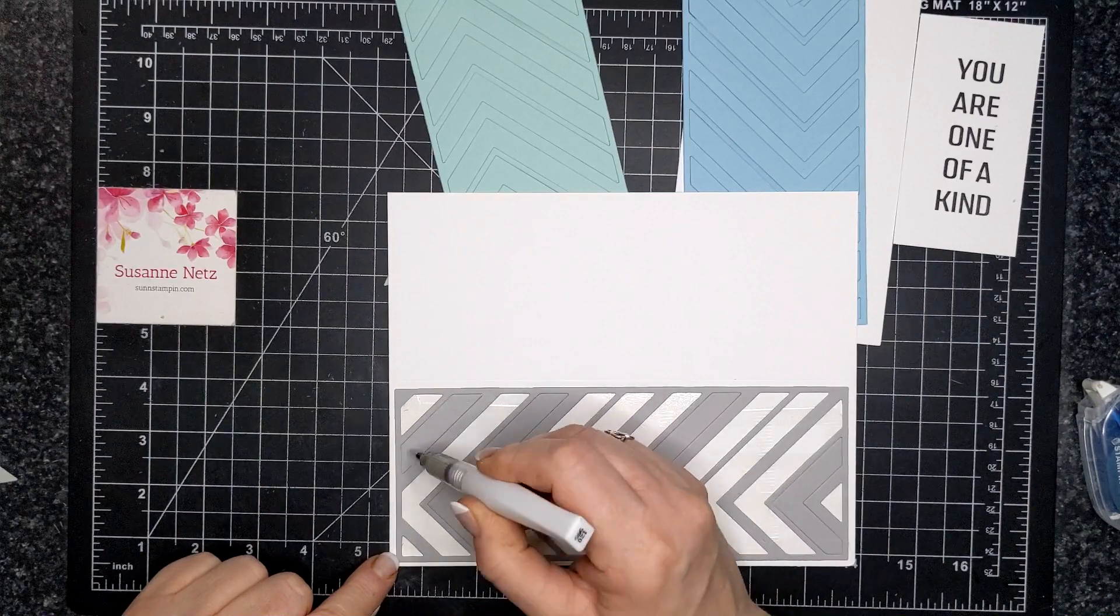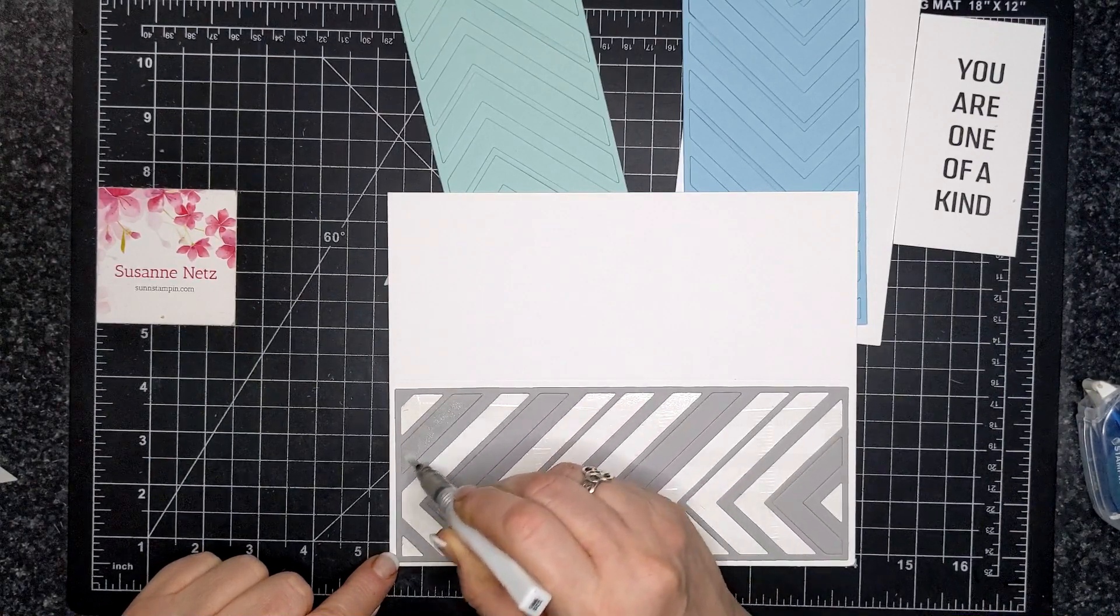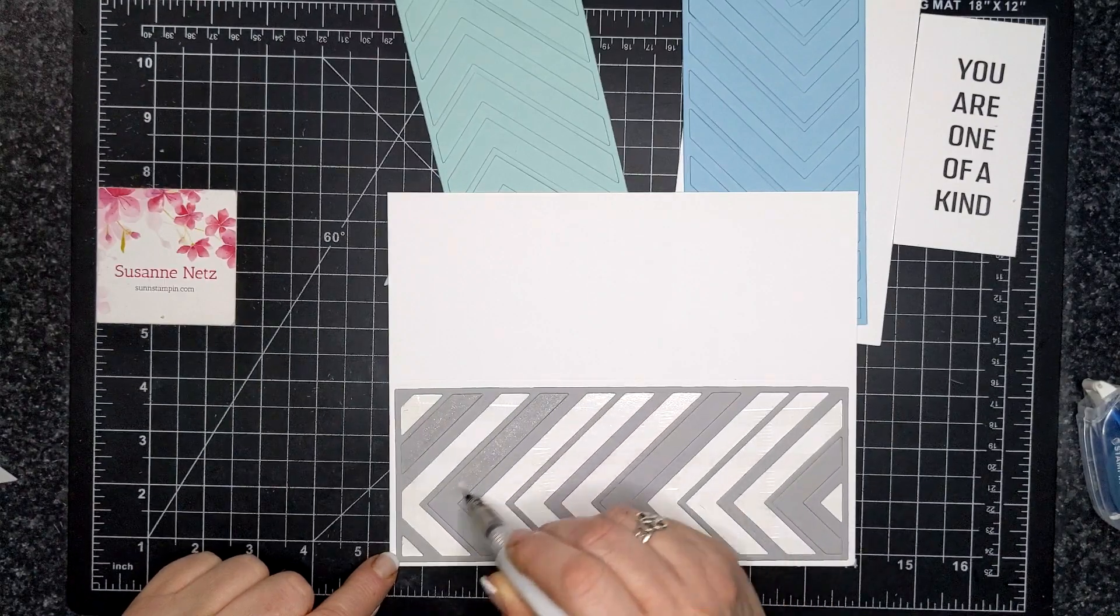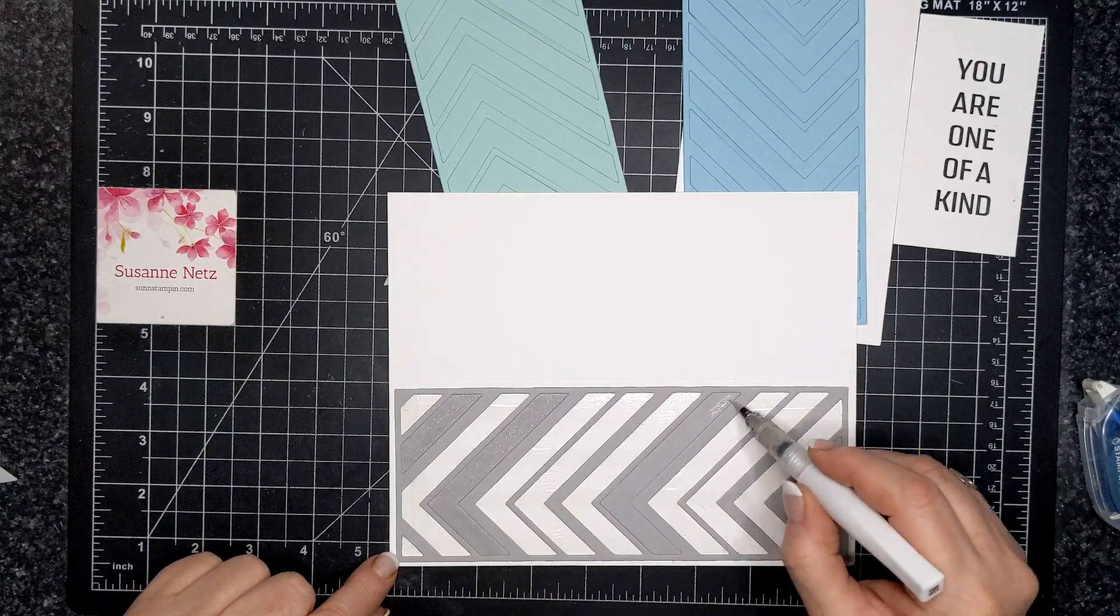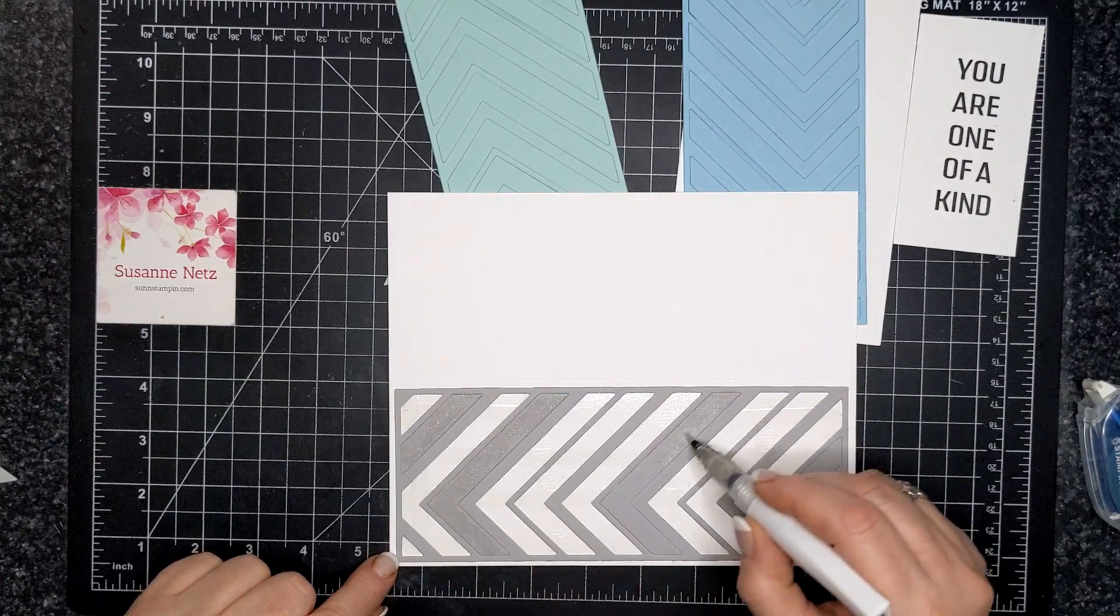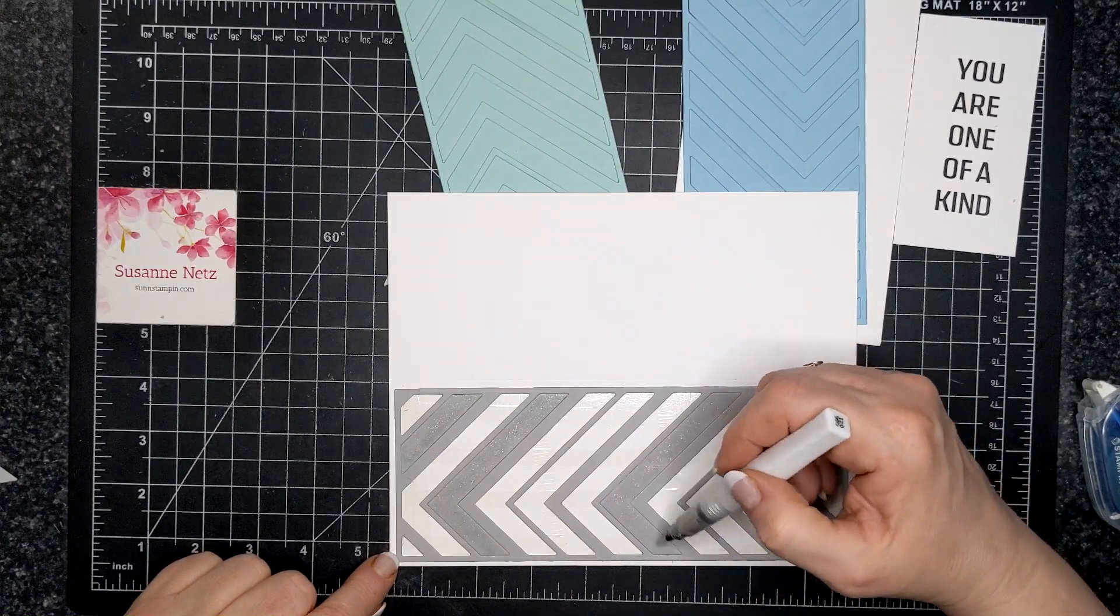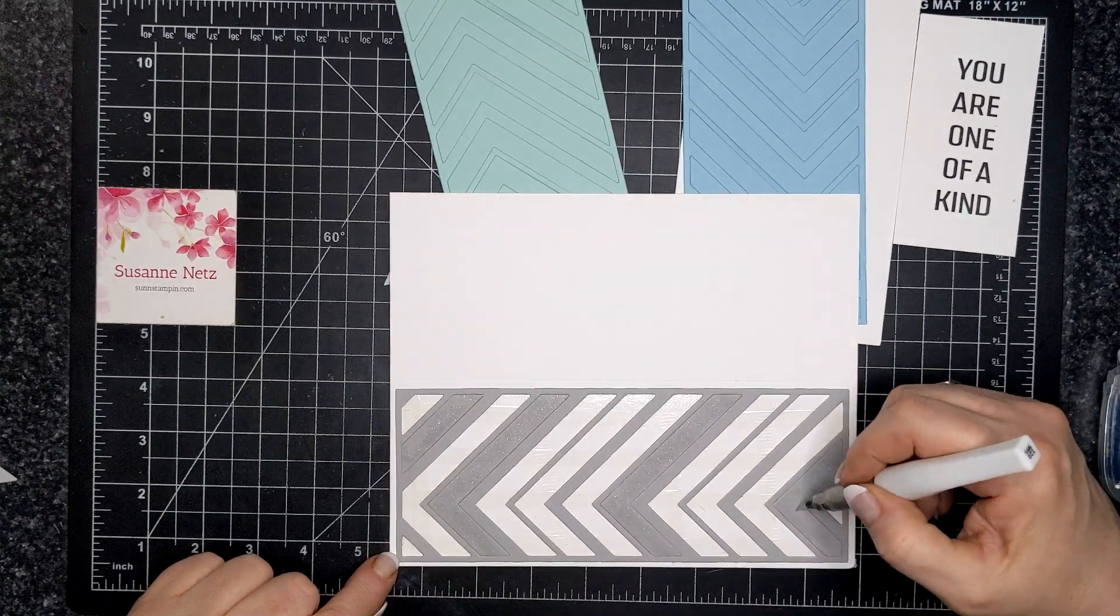All right. So here is my Wink of Stella brush. You know how much I love my Wink of Stella and I wanted to differentiate between the actual smoky slate border and the pieces that I put inside. So the negative pieces. So I covered the basic gray with Wink of Stella.